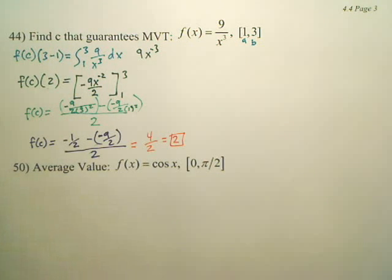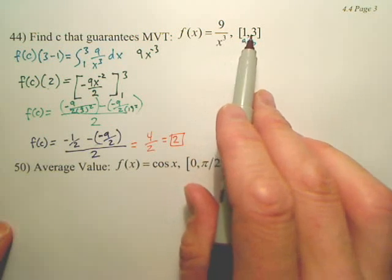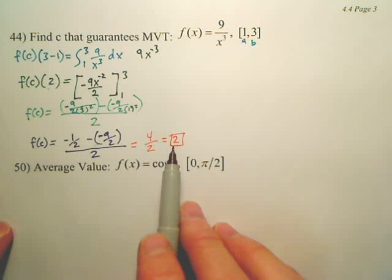Now is that my answer? No, that's F of C. Meaning, the average height of this graph on this interval is 2. The average height is 2. I want, where does your graph get a height of 2? On the interval.